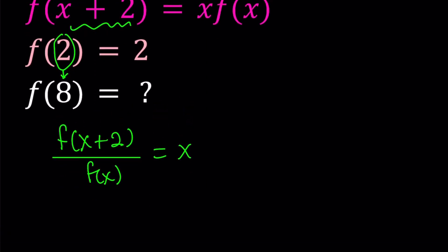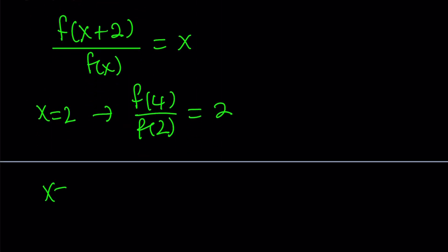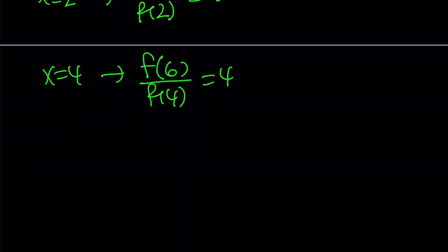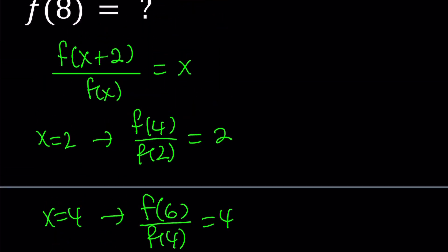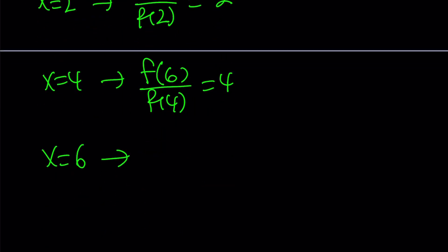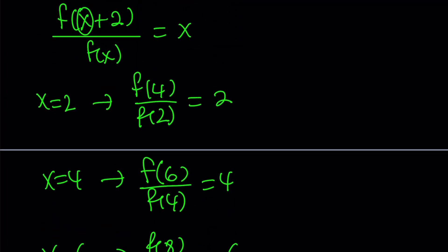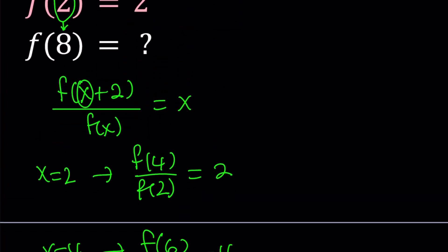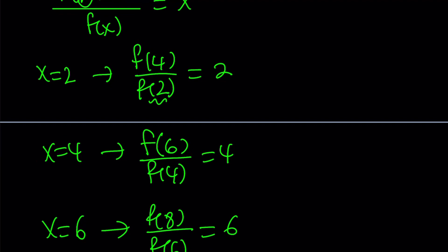I'm going to replace x with 2 first. And then from here, I'm going to be getting f(4) over f(2) equals 2. And then I'm going to replace x with 4. That's going to give me f(6) divided by f(4) equals 4. And then I'm going to replace x with 6. And that's going to give me f(8) divided by f(6), and that's equal to 6. Now, I'm trying to find f(8), and I do know f(2). I can go ahead and plug it in.